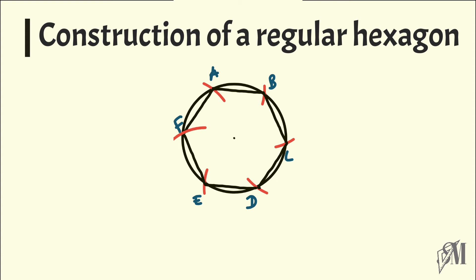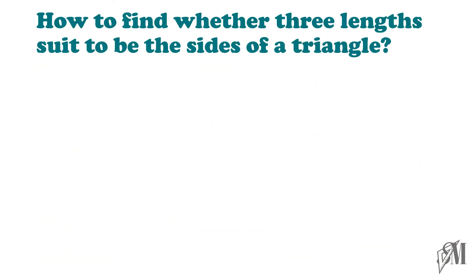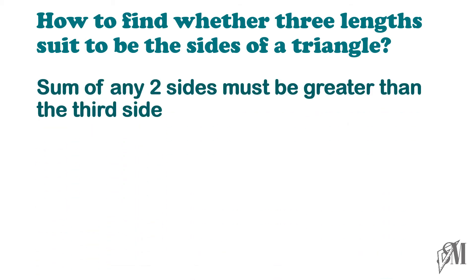Now we are going to see how to find whether three lengths can be the sides of a triangle. Suppose three lengths are given to you and they ask whether these lengths can be the three sides of a triangle. The rule is: if the sum of any two sides is greater than the third side, then the three sides can form a triangle.